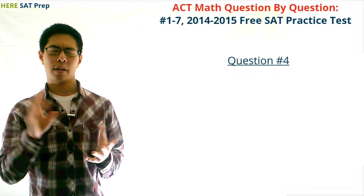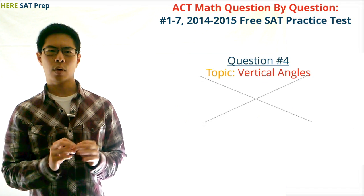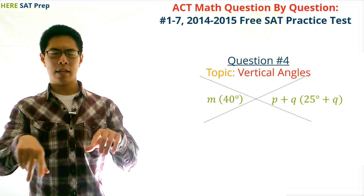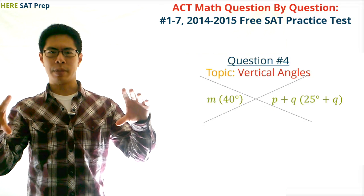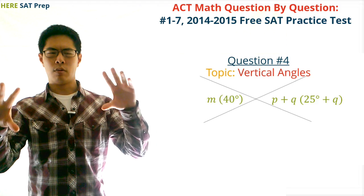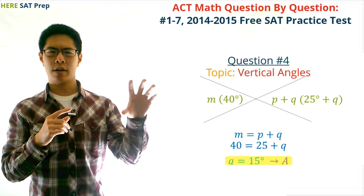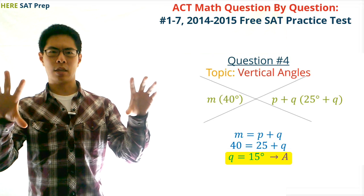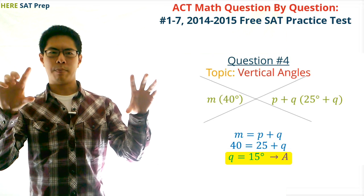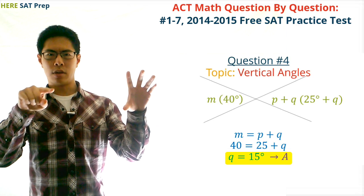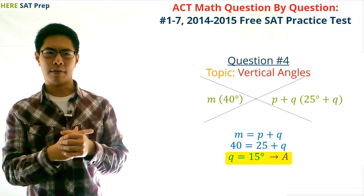Question number four. The topic of this question is vertical angles. We first recognize that since lines l and k intersect, then angles m and p plus q are vertical angles, which means they are equal to one another. Since angle m is equal to 40 degrees, then p plus q is also equal to 40 degrees. Then since angle p is equal to 25 degrees, angle q will equal 40 minus 25 degrees, which is 15 degrees.